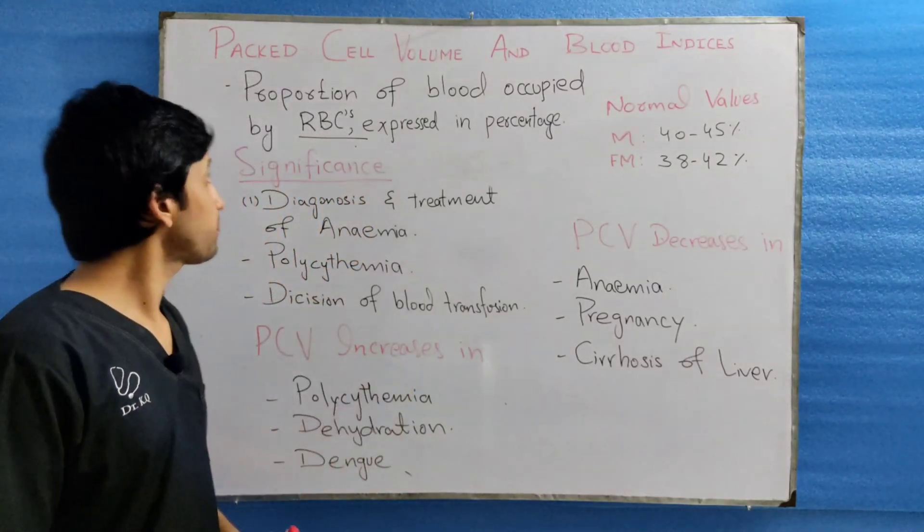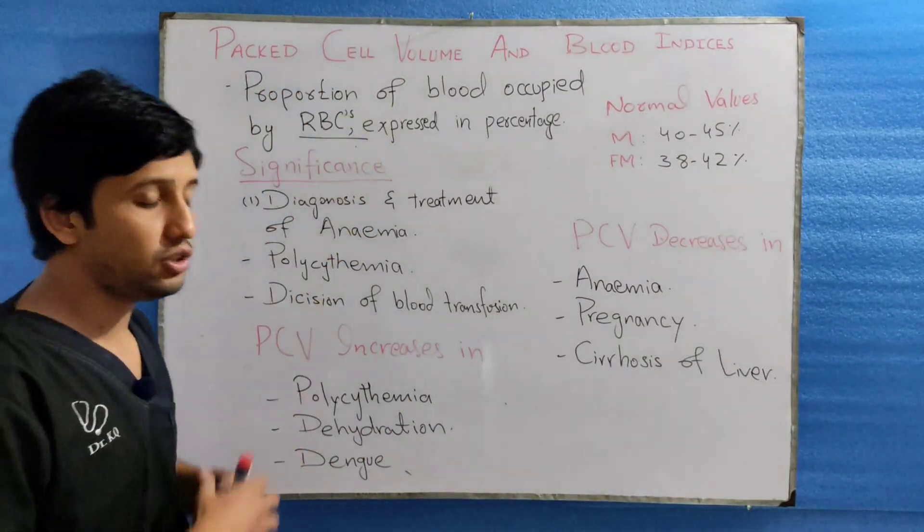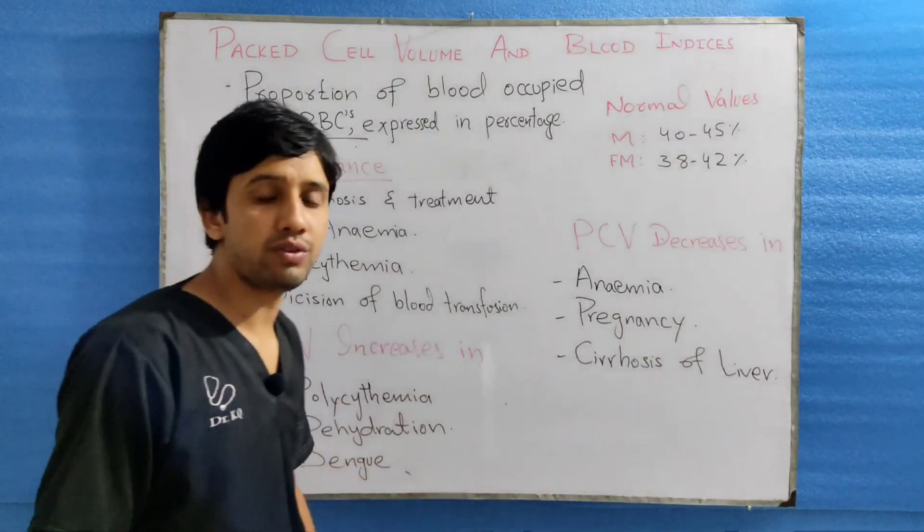What is PCV? PCV is the packed cell volume. It is the proportion of the blood which is occupied by the RBCs, and it is expressed in percentage form. The normal value of the PCV is 45%, ranging between 40 to 45% in males, while in females it is usually lower, at 38 to 42%. It is also called the hematocrit value — hematocrit value and PCV refer to the same thing.